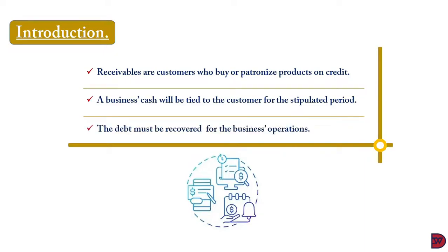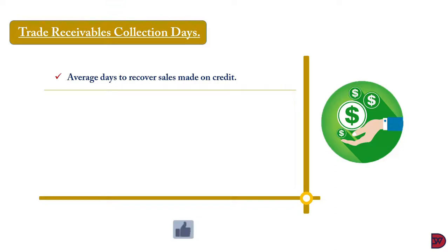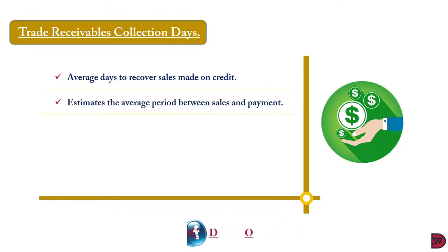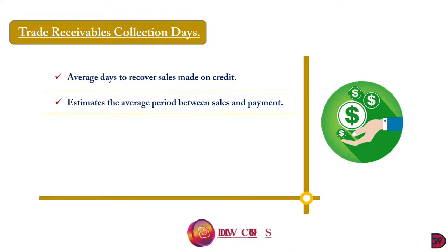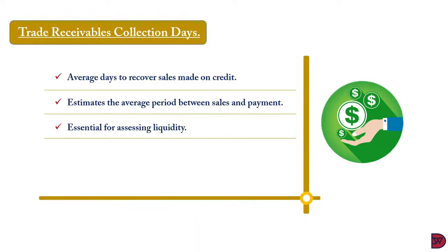A receivable is a current asset that forms part of the liquidity assessment of a business. Once you have a receivable, you need to be able to recover the money before you can use it to settle your short-term debt. The trade receivable collection days will inform the business of the average days it takes for their receivables to pay up the debt they owe. You also estimate the average period between the time the sale was made and the payment was received from the customer. This is essential to assess liquidity because once you have sold goods or rendered services on credit, the money you expect to use to settle your debt is in the hands of a third party. You have to collect the money before you can use it to settle debt, pay bills, or buy materials to produce or resell inventory.